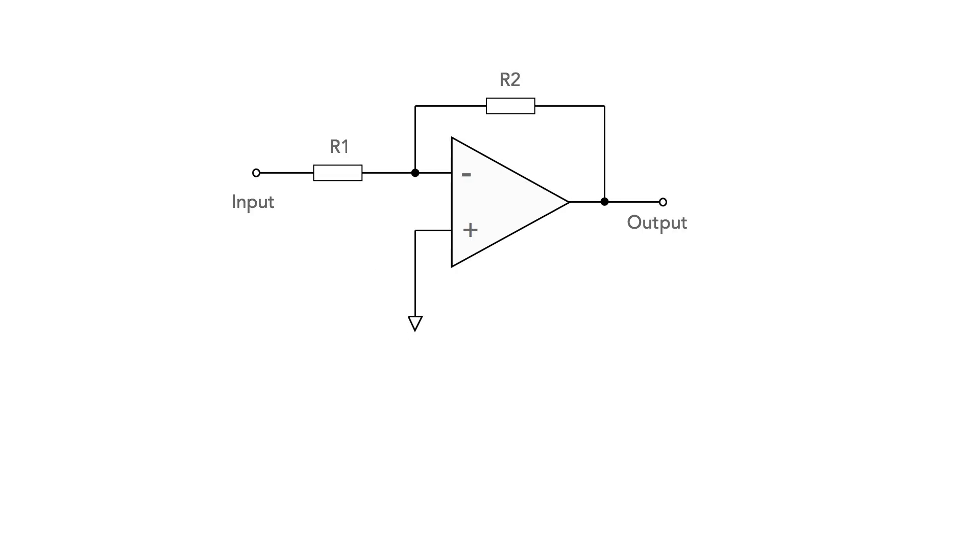Let's look at the inverting amplifier first. The circuit is quite straightforward as we see here. It consists of one resistor from the output to the inverting input, and another from the inverting input to the overall circuit input. A signal is applied to the input. It then appears at the output inverted, hence the name.